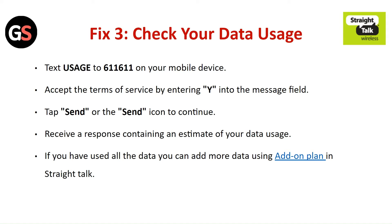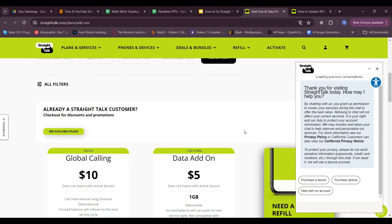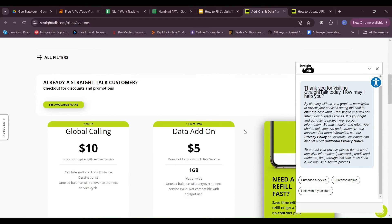Fix 3: Check your data usage. Text USAGE to 611611 on your mobile device. Accept the terms of service by sending Y into the message field. Tap send or the send icon to continue. You will receive a response containing an estimate of your data usage. If you have used all the data, you can add more data using the add-on plan in Straight Talk.